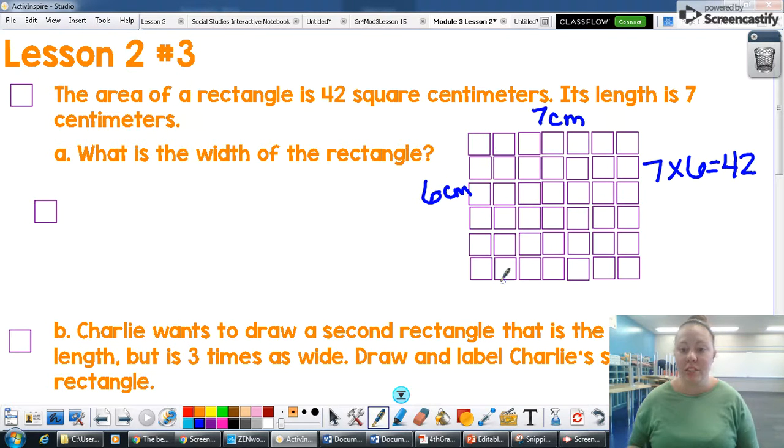So the area is 42. And if I count all of these individual tiles, I will get to 42. So the first question, what is the width of the rectangle? The width is six centimeters.